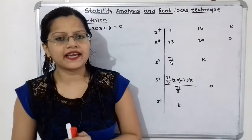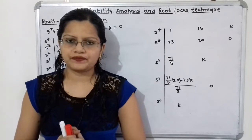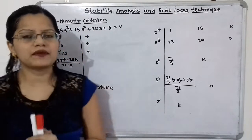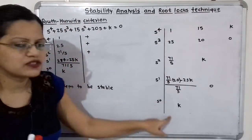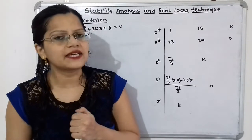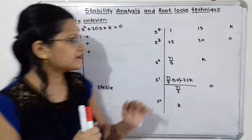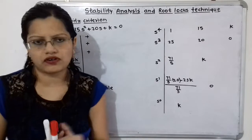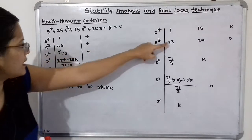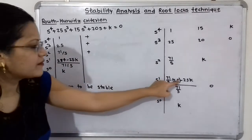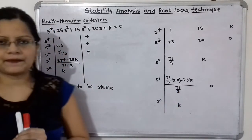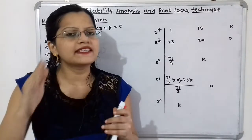Now we will determine the range of K for the system to be stable. The condition is: after formation of the Routh array, the values in the first column should all have the same sign. If there is no sign change, the system is stable. Rewriting the first column values: S raised to 4 gives 1, S cubed gives 25, S squared gives 71 by 5, S raised to 1 gives (284 minus 25K) divided by 71 by 5, and S raised to 0 gives K. There should be no sign change.